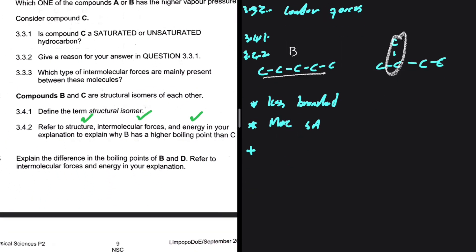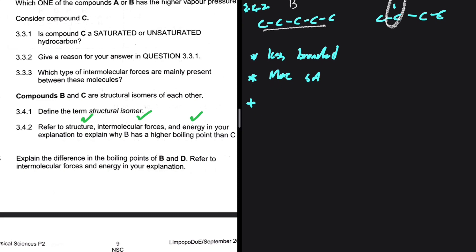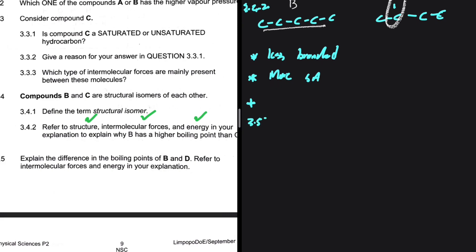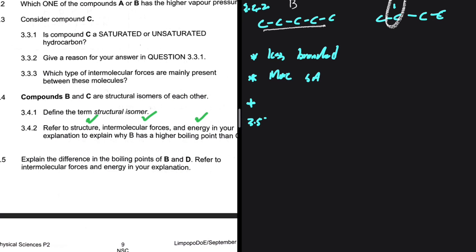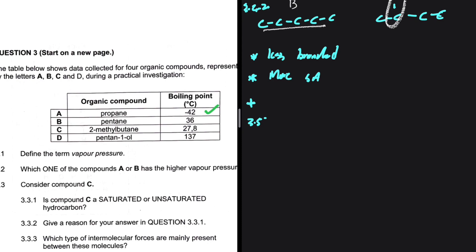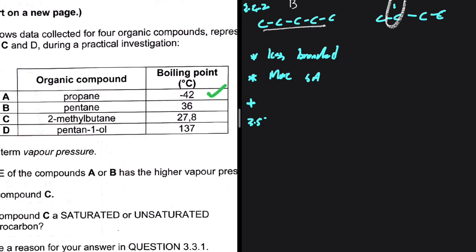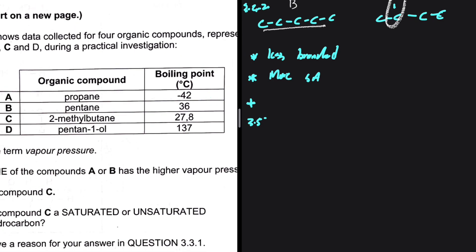The last question, 3.5. Explain the difference in the boiling points of B and D. Refer to the intermolecular forces and energy in your explanation. Let's go ahead and look at B and D. B is pentane and D is pentane 1-ol.